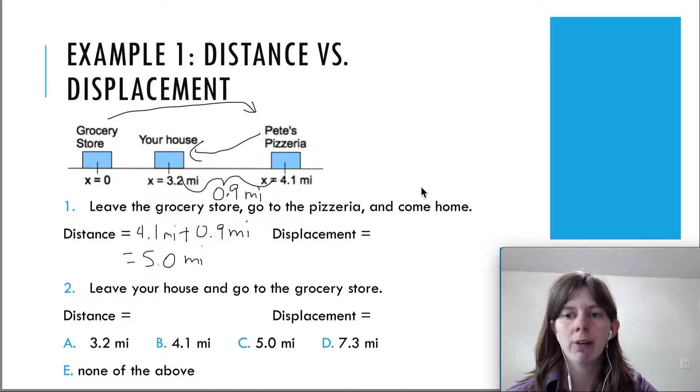So displacement - we defined it as the delta x is the final position minus the initial position. So the final position is right here at 3.2 miles, and the initial position is at the grocery store.